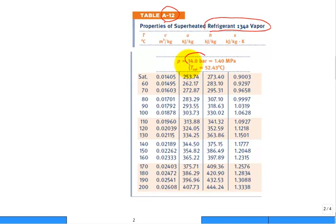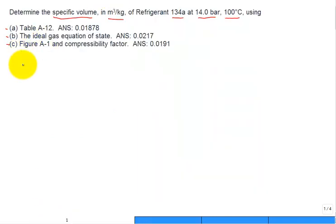We find the pressure block of 14 bar and we look down for a line of constant temperature of 100 degrees C. This is the column for specific volume and so we read off 0.01878 meter cube per kilogram. So we could go back here and just say for part A, specific volume is 0.01878 meter cube per kilogram. Box it. Call that the answer for part A.